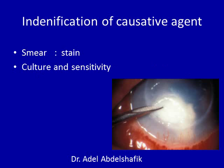Now I want to talk about the general lines of treatment of infective corneal ulcers. First, we need to identify the agent. We can make a stain of material collected from the base of the ulcer — we use a fine needle to collect some material at the base near the edge, and stain it directly, or we can culture it and see the sensitivity of the organism to different antimicrobial agents.